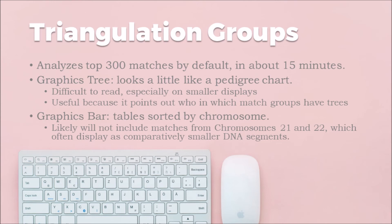I can't fully figure out the graphics tree, but one enticing feature is that it provides a little treat icon on every person who has a tree — a great way to see at a glance not only match groups but who in the group actually has a tree. The graphics bar makes a lot more sense to me. It's a table showing little segment graphics sorted by chromosomes, and it's quite straightforward and beautiful to look at.